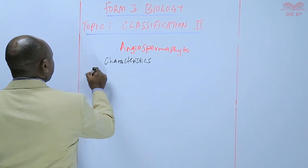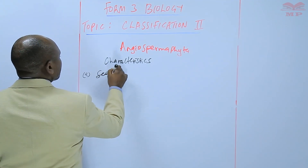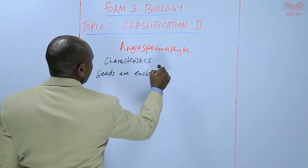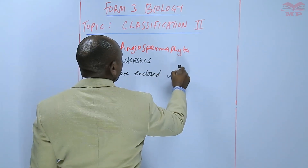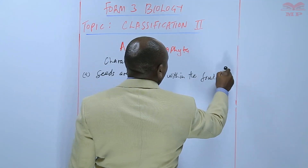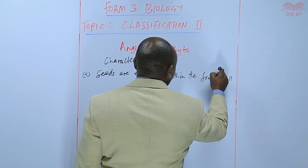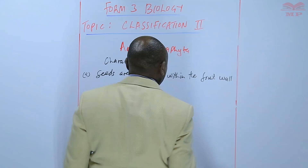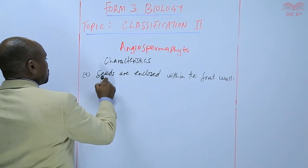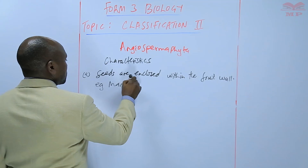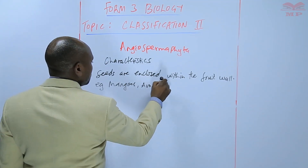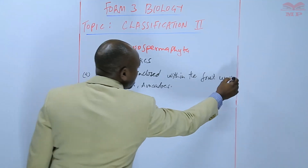So basically we are saying that seeds are enclosed within the fruit wall. Examples include mangoes, avocados, etc.